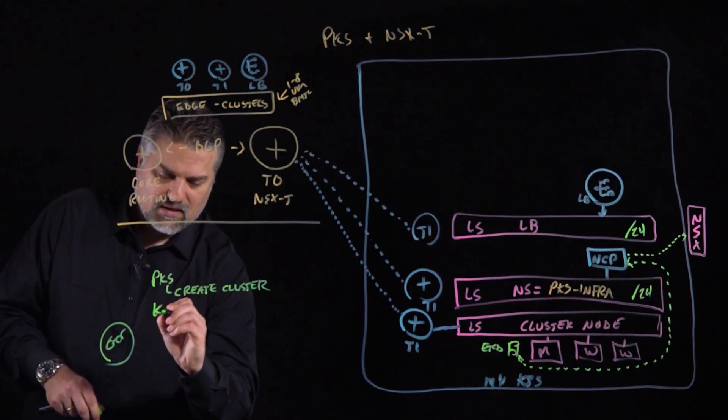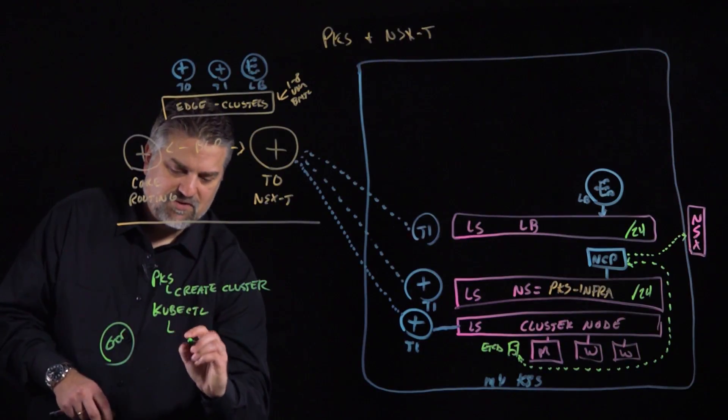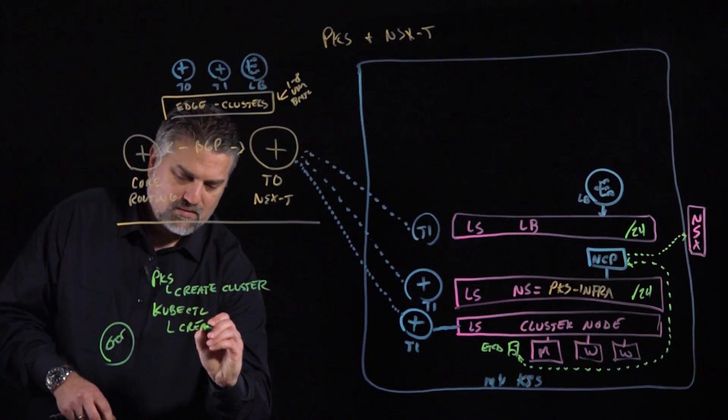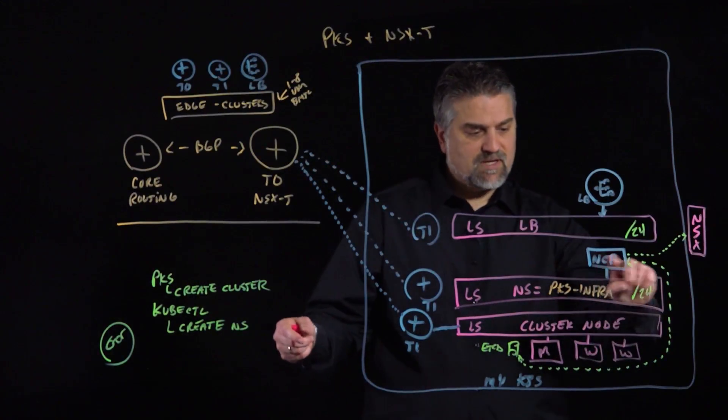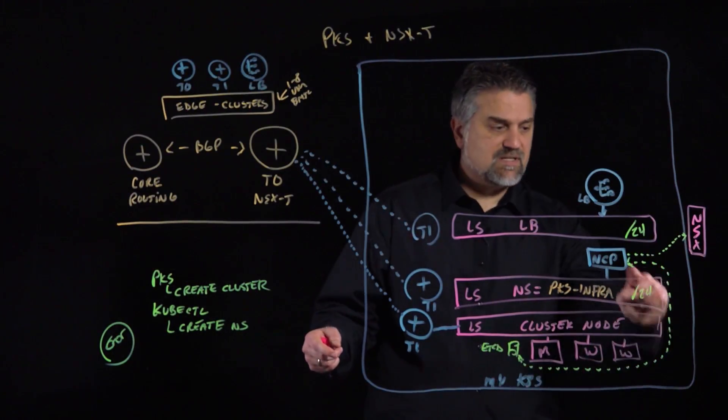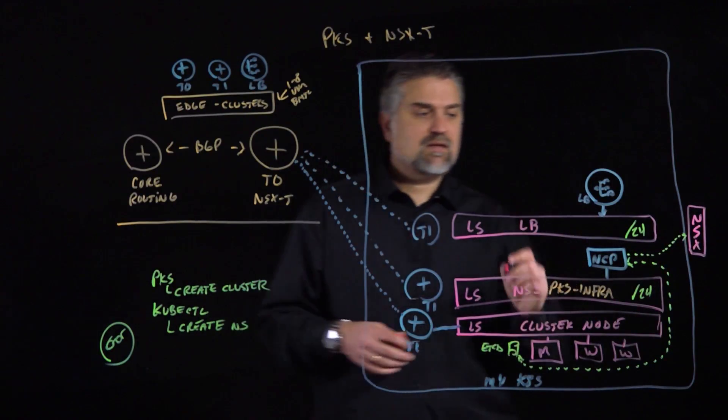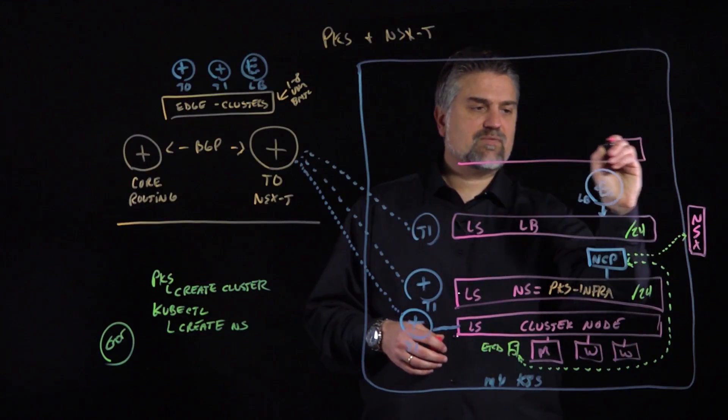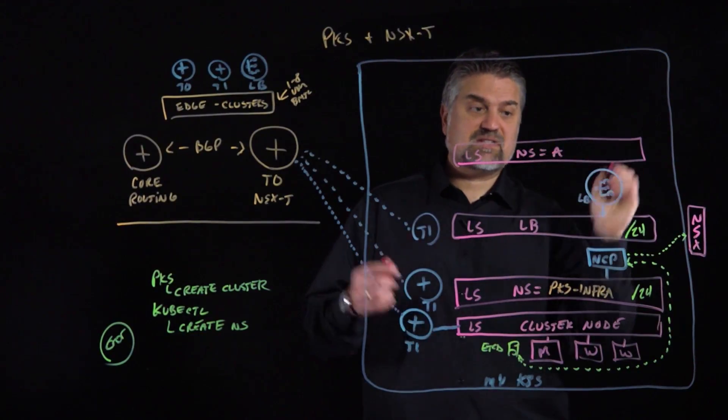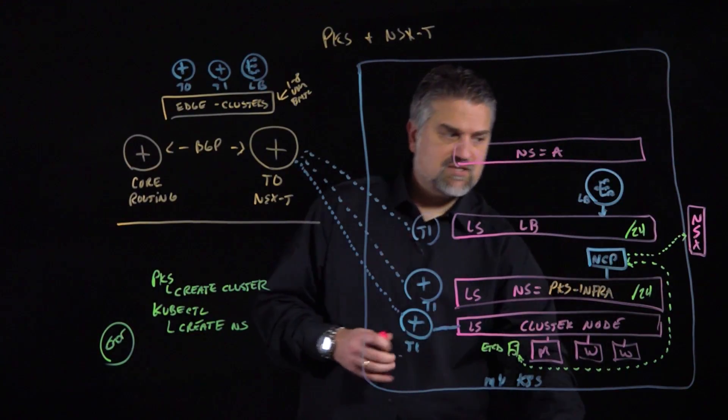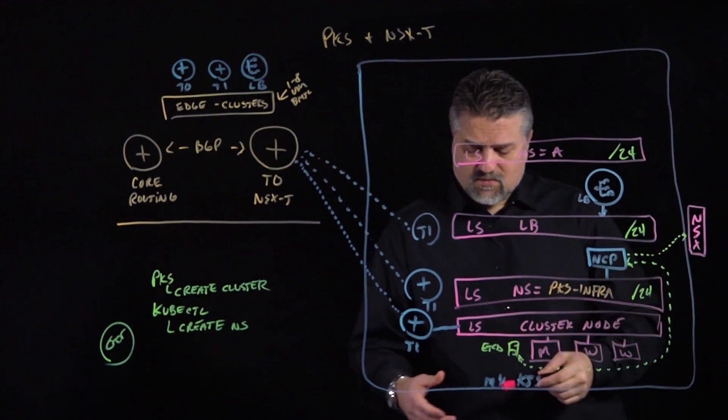If we go back to our developer, now instead of using the PKS CLI, let's say he or she is using the kubectl CLI. One of the first things we want to do is create a namespace. So what happens whenever we create a namespace? Remember we've got NCP watching what's happening here through our connection with etcd and making sure that we create the relevant constructs in NSX-T. We'll get another logical switch whenever we create our namespace. So we'll make this logical switch and we'll put it namespace equals A. It's the namespace A that's been created for us.